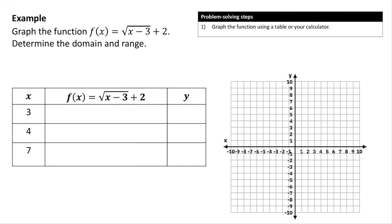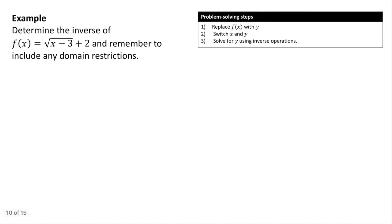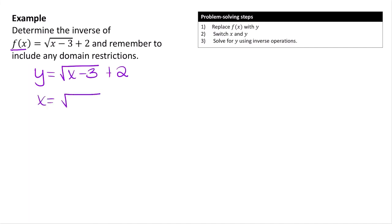Now let's graph the function f(x) = √(x − 3) + 2 and find its inverse. The domain starts at x = 3 and goes to positive infinity. The range has a lowest y-value of 2, so it goes from 2 to positive infinity. To find the inverse, we replace f(x) with y: y = √(x − 3) + 2, then switch x and y to get x = √(y − 3) + 2.